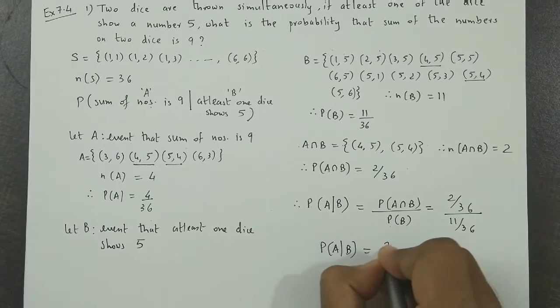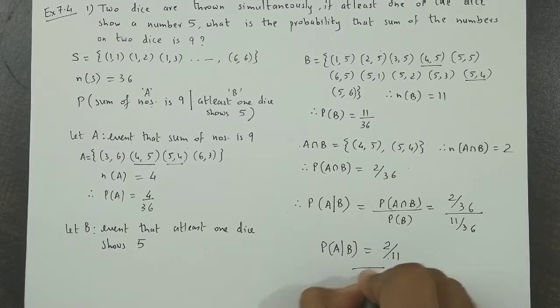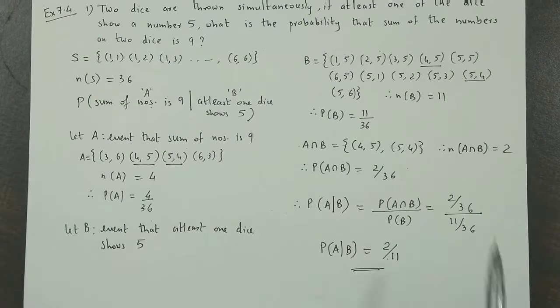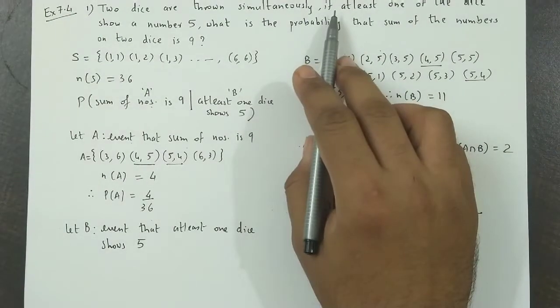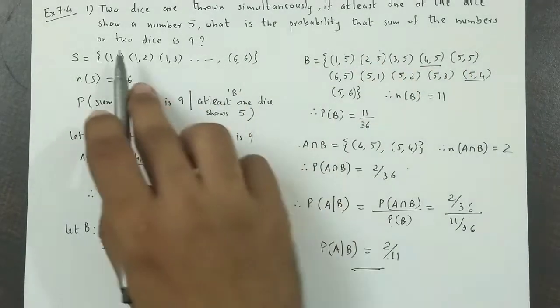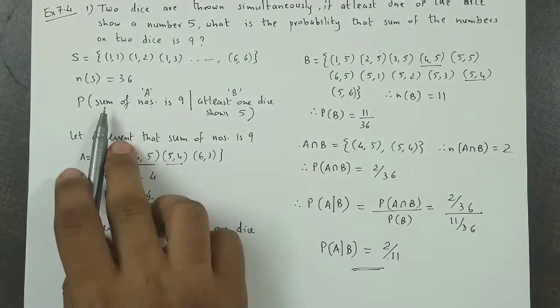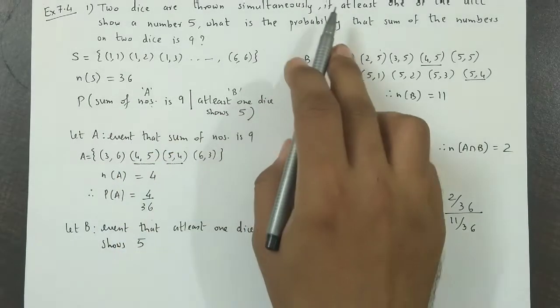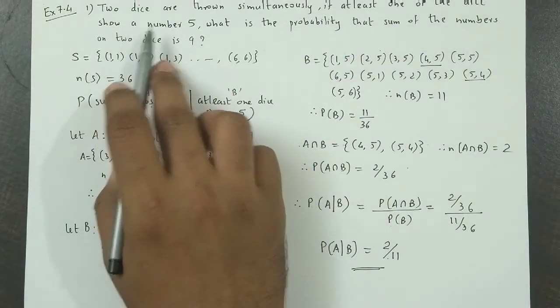given B) is equal to 2/11. So remember, the 'given' part is the given event. We need to find probability that sum of numbers is 9, so sum of numbers is 9 if